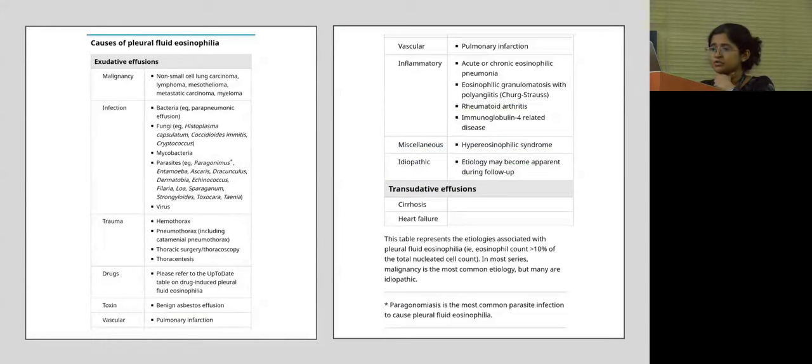Common causes of pleural fluid eosinophilia, as already described: malignancy, non-small cell lung carcinoma, lymphoma, mesothelioma have all been associated with it.